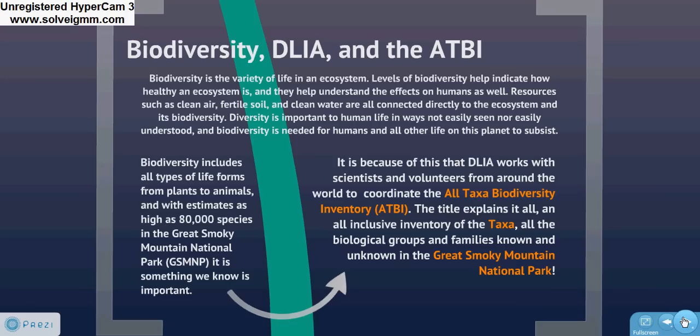Biodiversity includes all types of life forms, from plants to animals, and with estimates as high as 80,000 species in Great Smoky Mountains National Park, it is something we know is important. Because of this, DLIA works with scientists and volunteers from around the world to coordinate the All-Taxa Biodiversity Inventory — an all-inclusive inventory of all the biological groups and families, known and unknown, in the Great Smoky Mountains National Park.